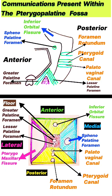Looking at the picture: anteriorly we have the inferior orbital fissure; posteriorly we have the foramen rotundum, the pterygoid canal, and the palatovaginal canal. Medially it has the sphenopalatine foramen; laterally it has the pterygomaxillary fissure, where the third part of the maxillary artery enters. Inferiorly it has the greater palatine foramen and the lesser palatine foramen.